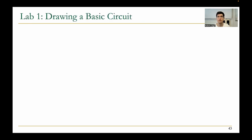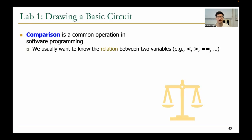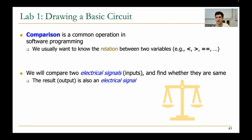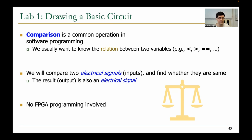In lab one, you will implement a comparison circuit. Comparison is a common operation in software programming because we usually want to know the relation between two variables. We will compare two electrical signals as inputs and find whether they're the same or not, with the output also being an electrical signal. You won't need an FPGA here, but we will encourage you to try it out on your FPGA later.